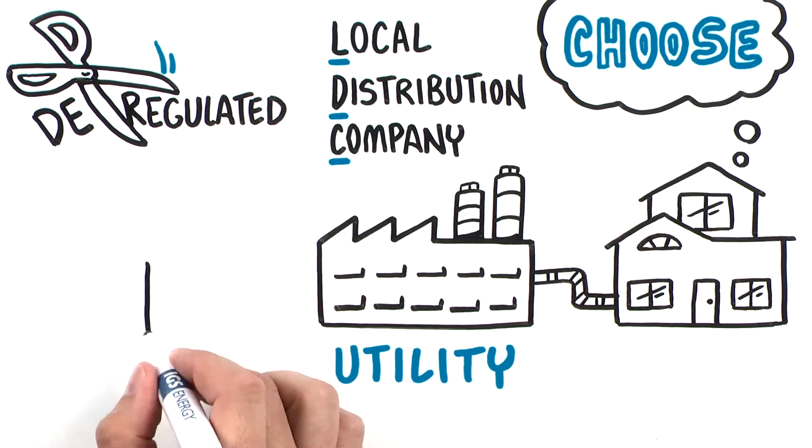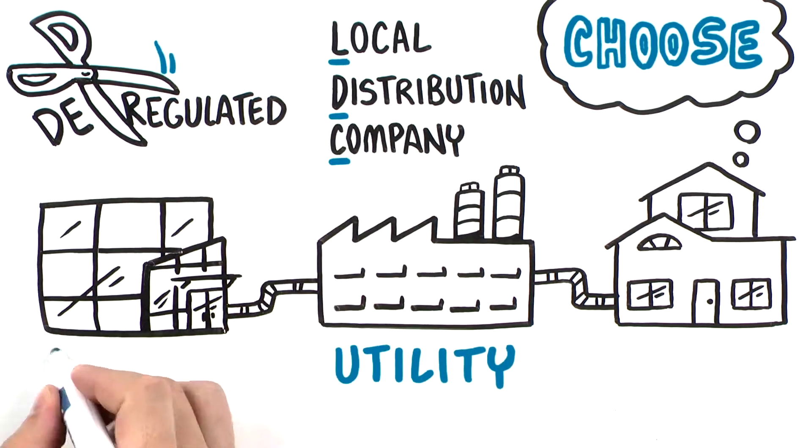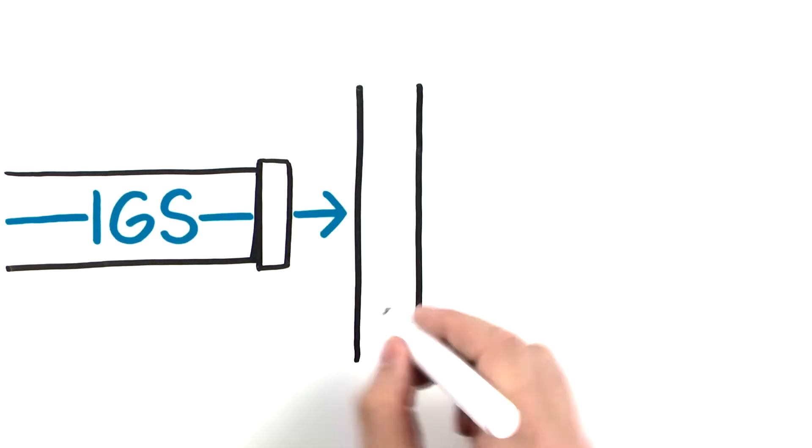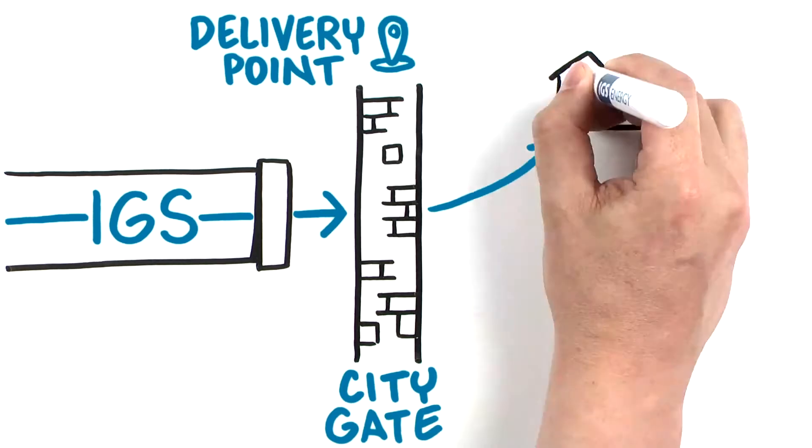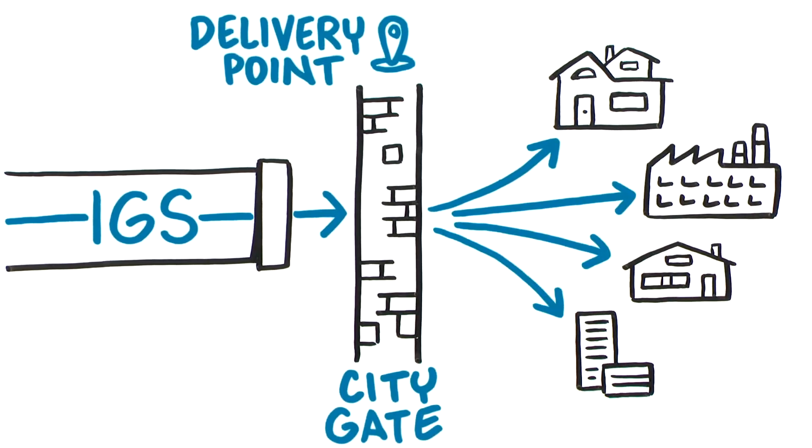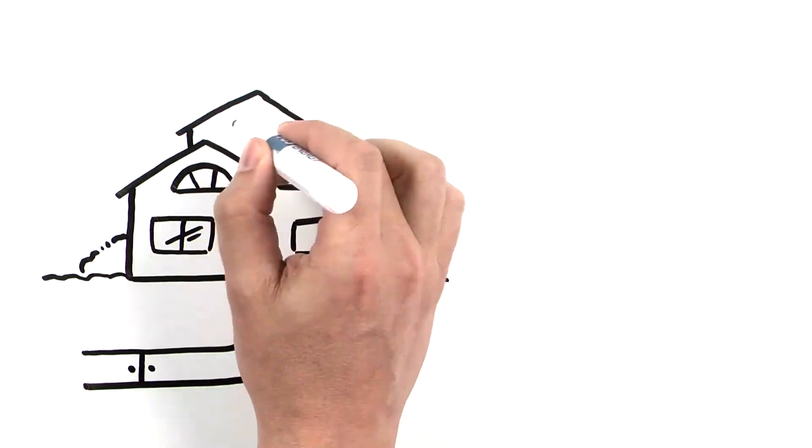Suppliers like IGS Energy deliver the gas to the city gate, which is the delivery point where it's transferred from a transmission pipeline to the utility. The utility still delivers the gas to the burner tip, which is your point of use like a furnace or water heater.